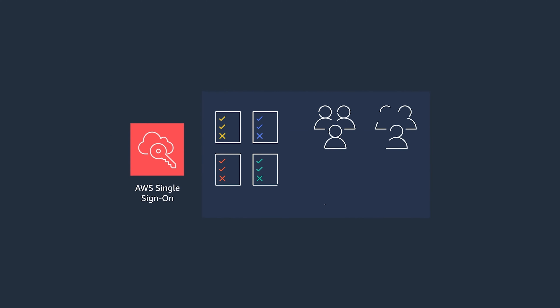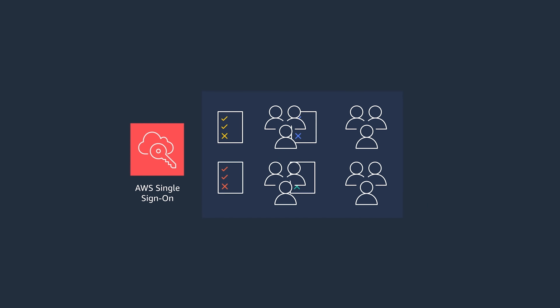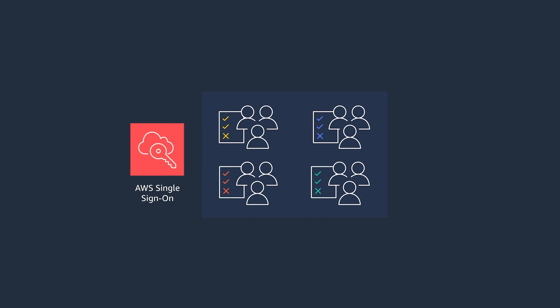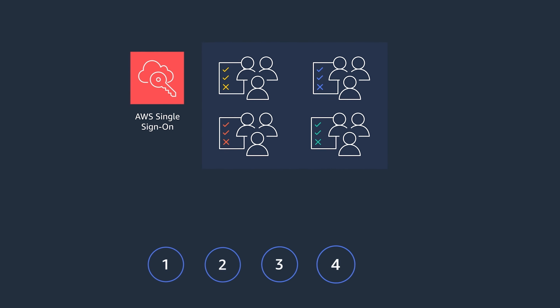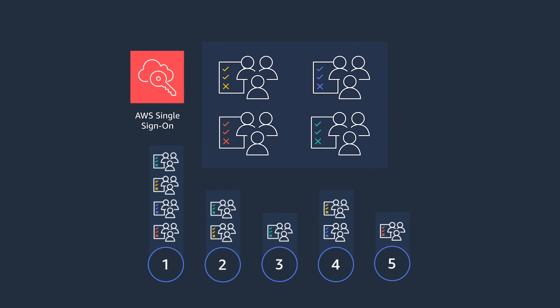Managing IAM policies at scale across multiple accounts can become challenging. But AWS Single Sign-On also makes life simple here. SSO configures and maintains all the necessary IAM policies in our accounts automatically. This way, you can focus on assigning user permissions based on common job functions and assign these permissions to users or groups in the specific accounts where they are needed. If you want to learn more, there are a lot of links for a deep dive in the description below. See you next time.